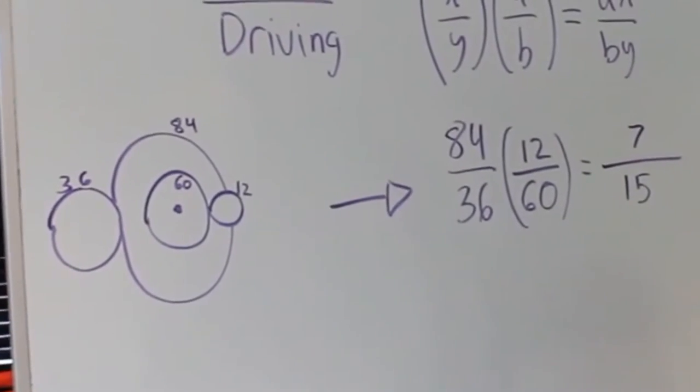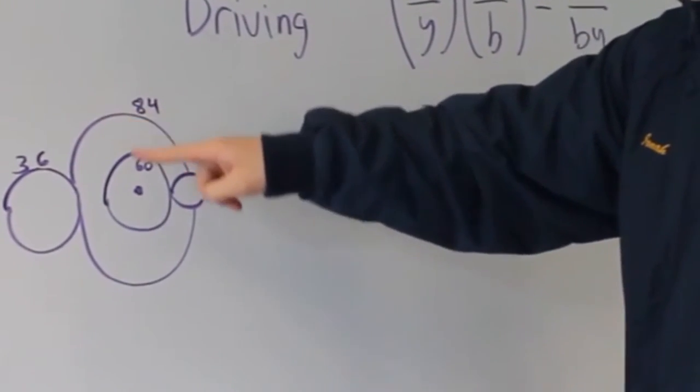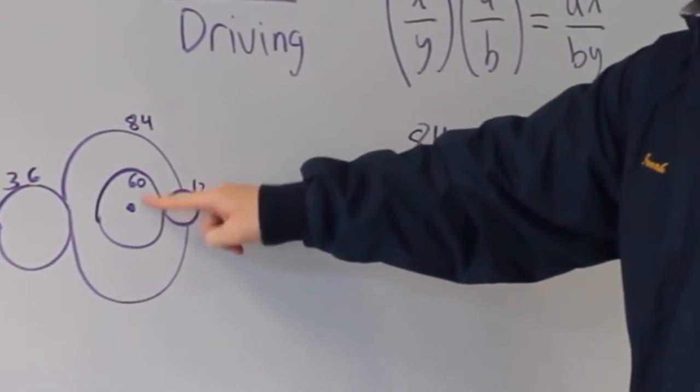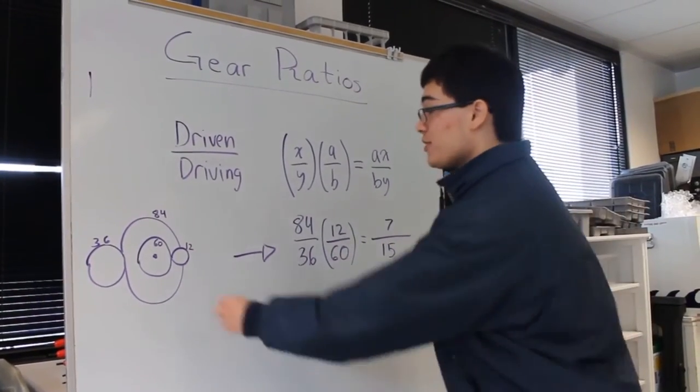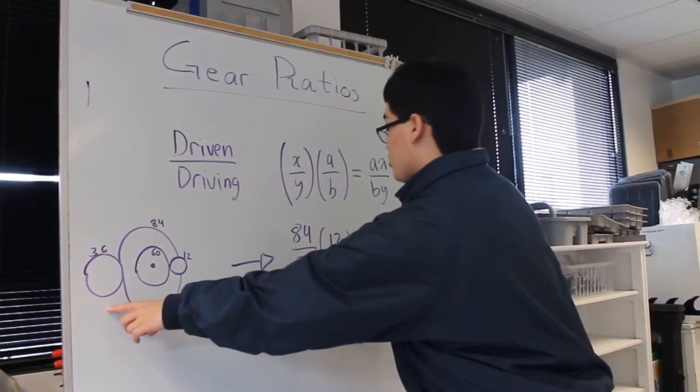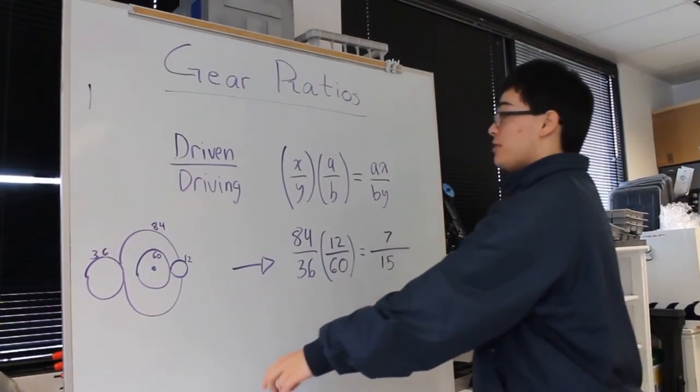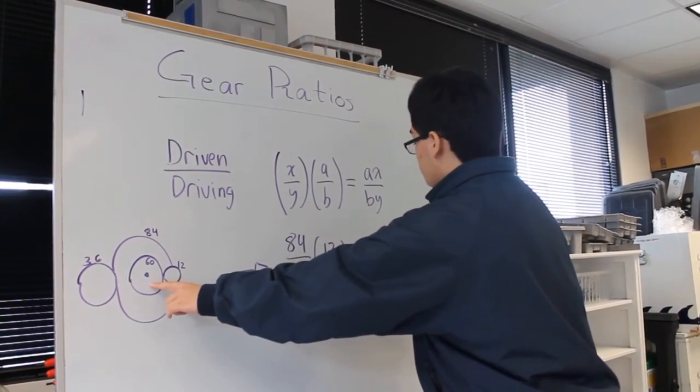In this real life example, I have a 36 tooth gear driving an 84 tooth gear, which is on the same axle as a 60 tooth gear driving a 12 tooth gear. If I want to do the math for this, I will take the driven gear in the first gear ratio over the driving gear in the first gear ratio, and multiply that by the driven gear in the second gear ratio over the driving gear in the second gear ratio. That will eventually simplify to a 7 over 15 gear ratio.